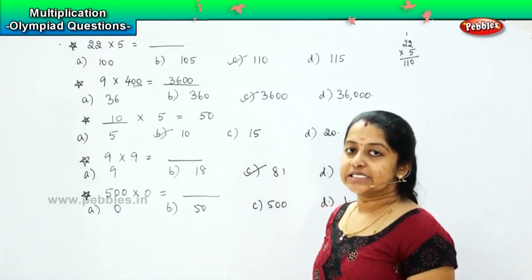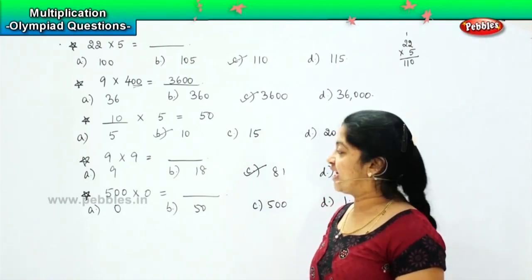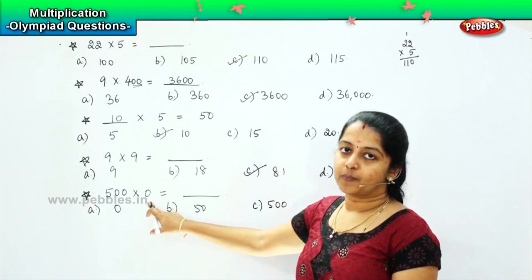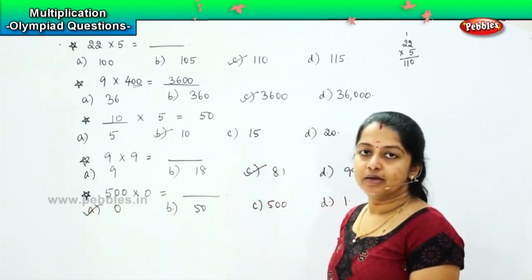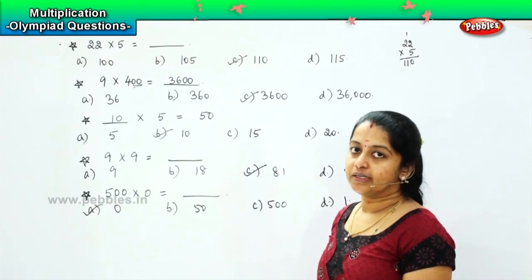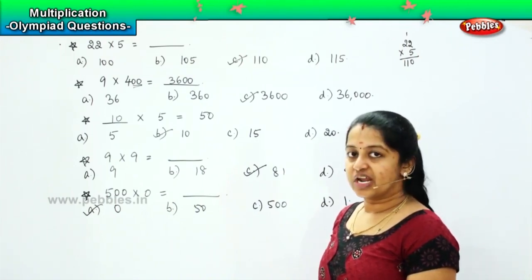So this is the first property of multiplication. Anything multiplied by 0 will give me, very good, 0. So which means option A 0 is the right answer. Clear, shall we move ahead?